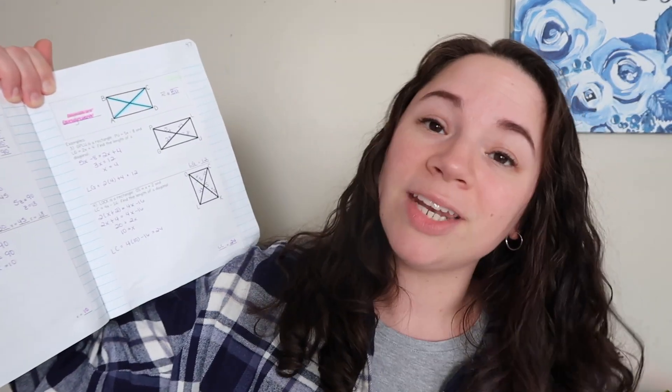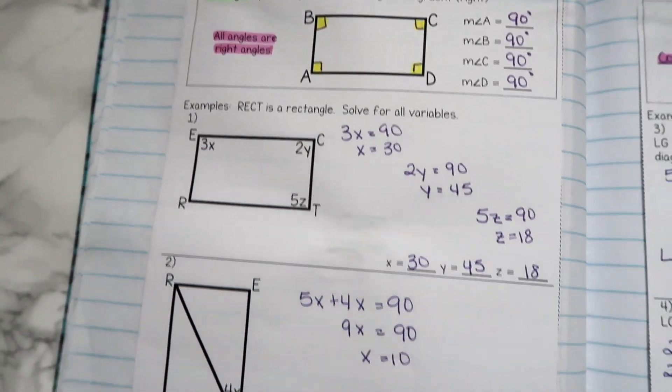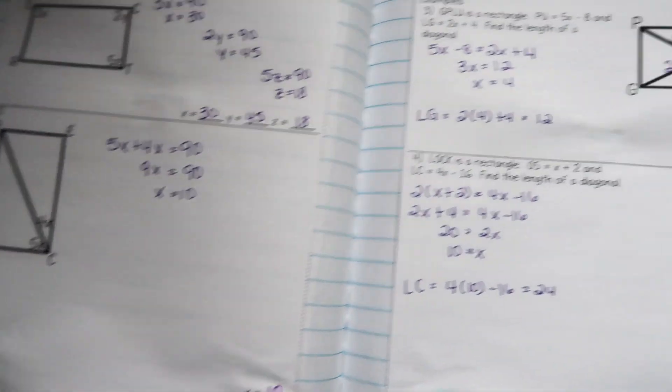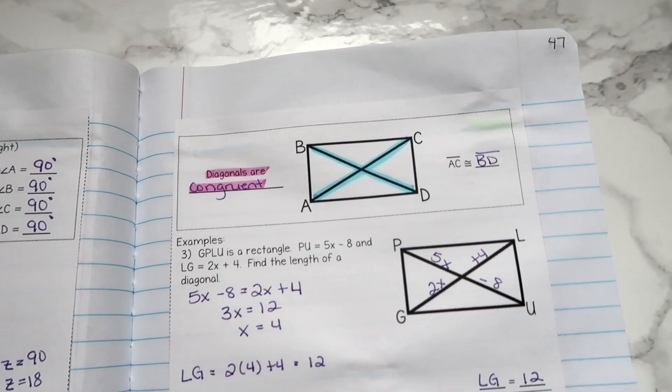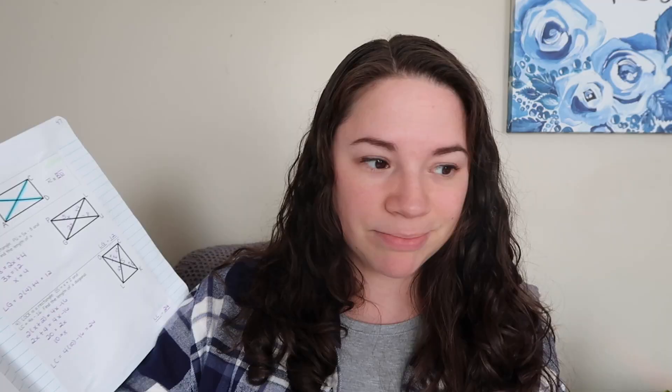Next we have rectangles — we cover the definition and the diagonals being congruent, with two examples for each showing different things students would encounter. Then we do practice on a Google Form for rectangles.